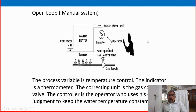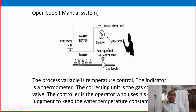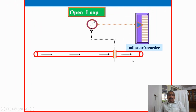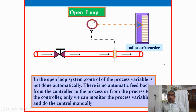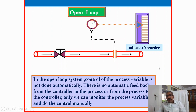An operator standing by and doing adjustments involves a lot of difficulty — this type of open loop system is an older type of control system. Still used for some unimportant applications, but for all important ones it is difficult to control the process properly. In an open loop, the control of the process variable is not done automatically. There is no automatic feedback from the controller to the process or from the process to the controller. We can only monitor the process variable and do the control manually — we can see the value from the indicator and recorder but must manually adjust if above or below set point.